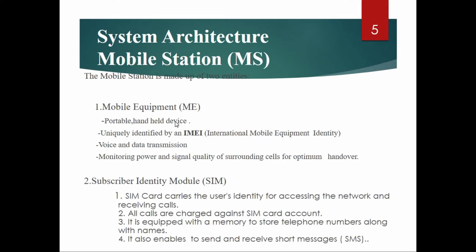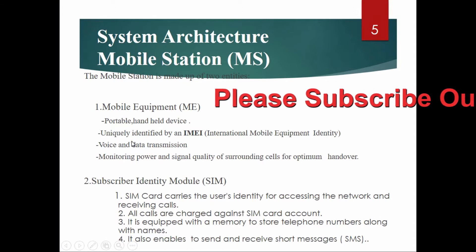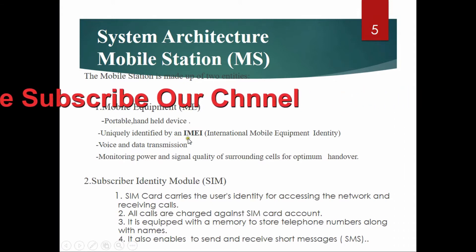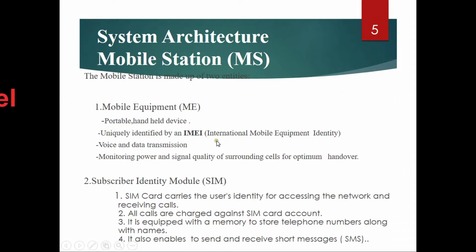Let's see the system architecture of the mobile station (MS). The mobile station is made up of two entities. The first is mobile equipment. Mobile equipment is a portable handheld device uniquely identified by an IMEI, that means International Mobile Equipment Identity. It handles voice and data transmission, monitoring power and signal quality of surrounding cells for optimum handover.